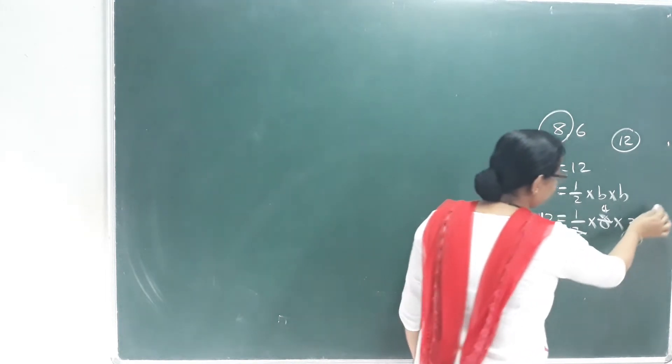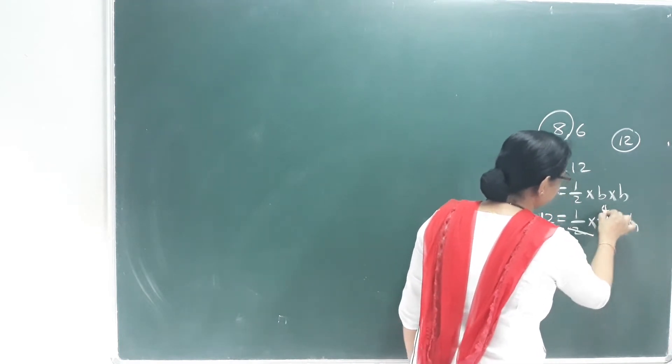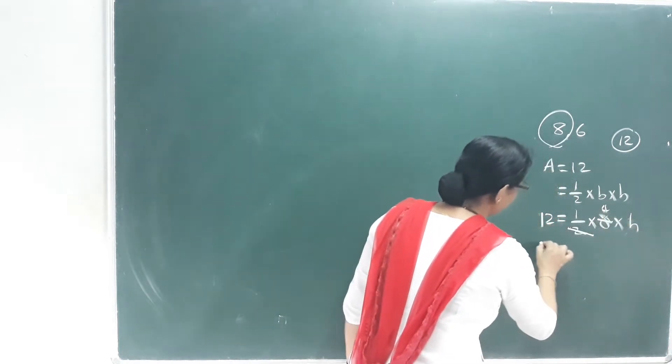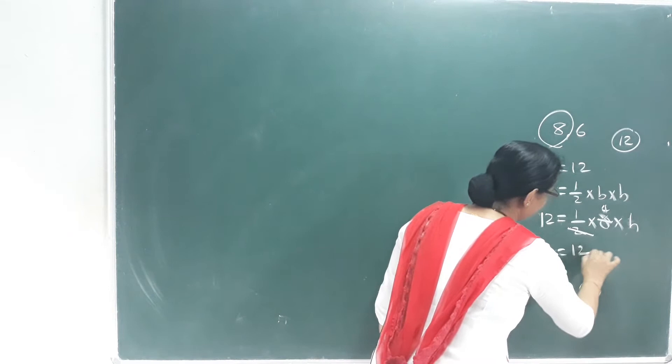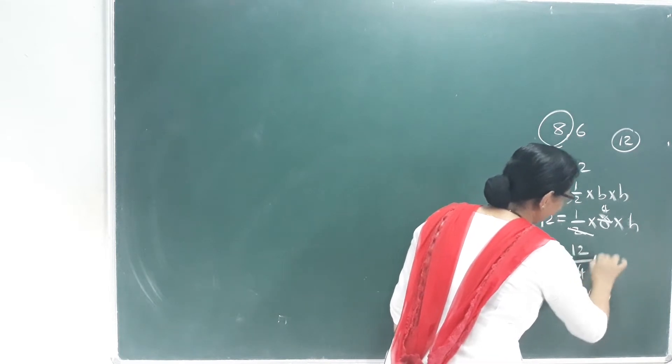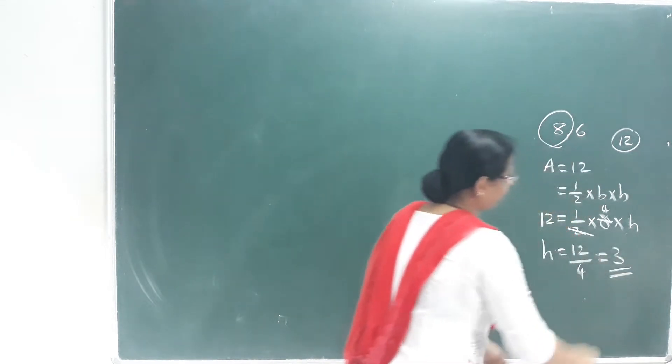If you look at the height here, the height equals 12 divided by 4, which equals 3. So the height is equal to 3 centimeters.